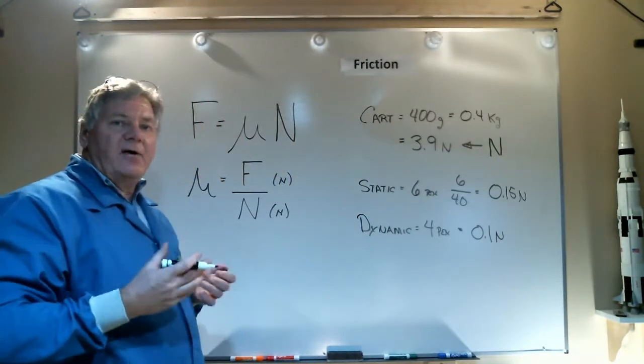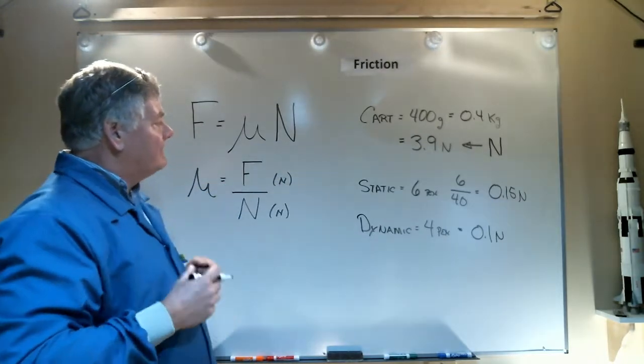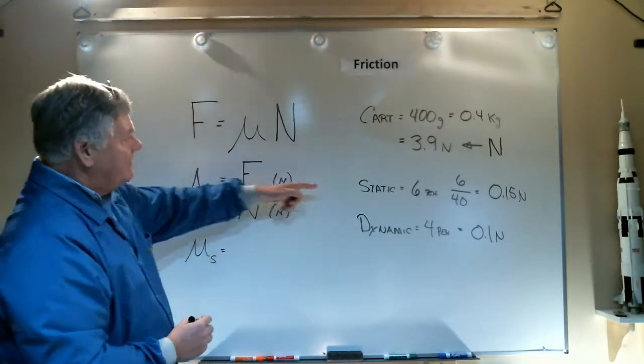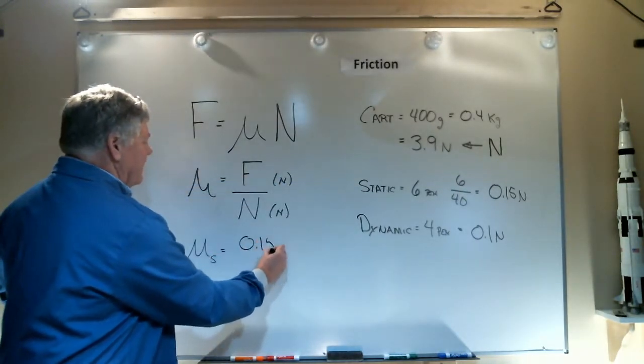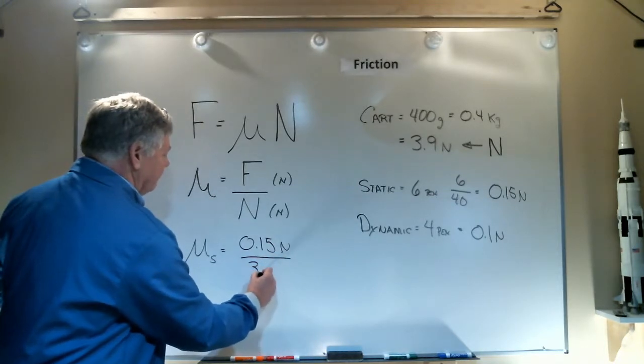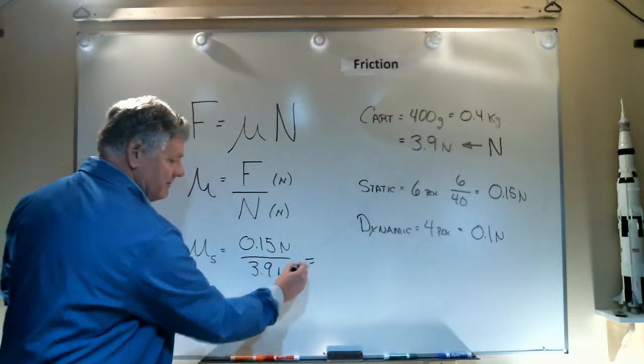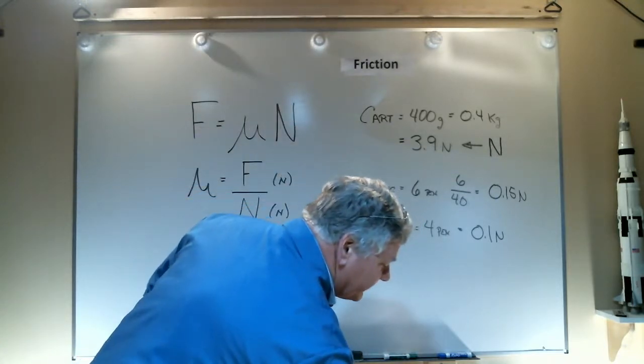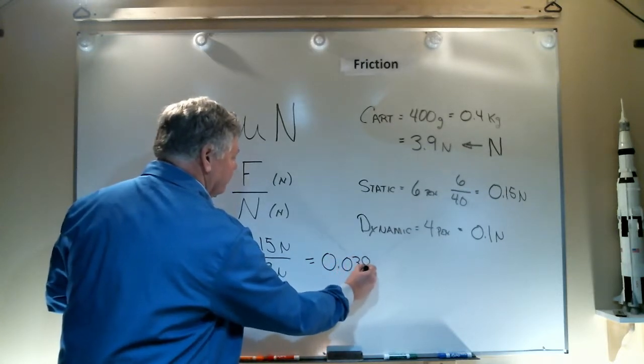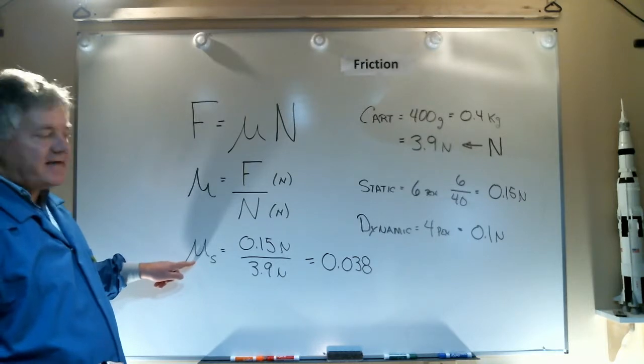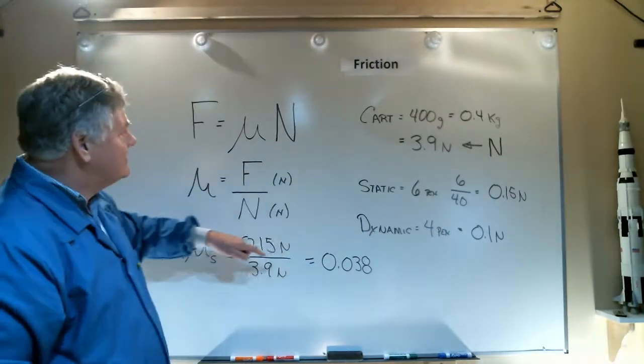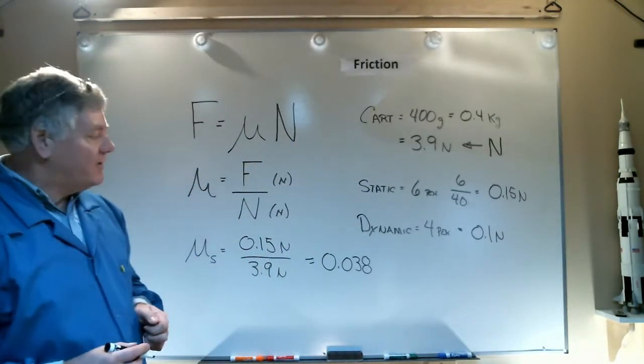To simply calculate the coefficient of friction for the static situation, I take μ static equals my F, which is 0.15 newtons, divided by my normal force, which is 3.9 newtons. So that's my static coefficient of friction for that cart, 0.038.